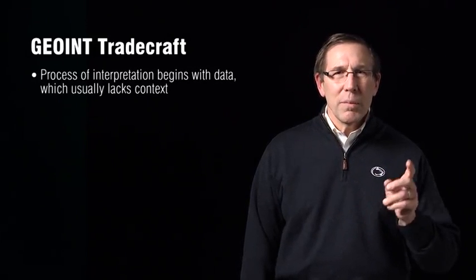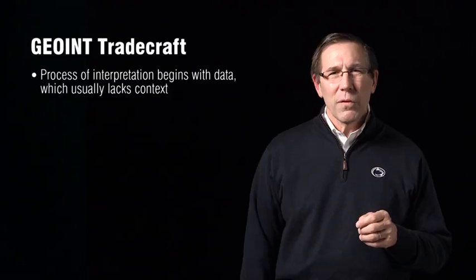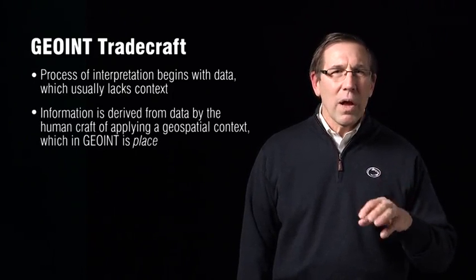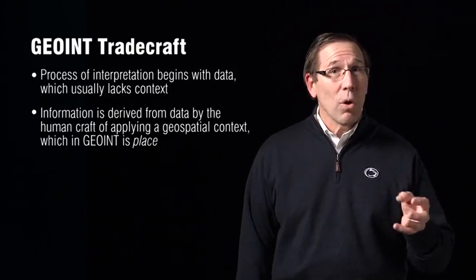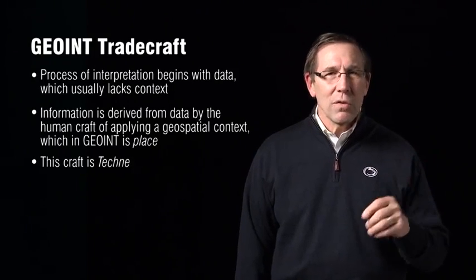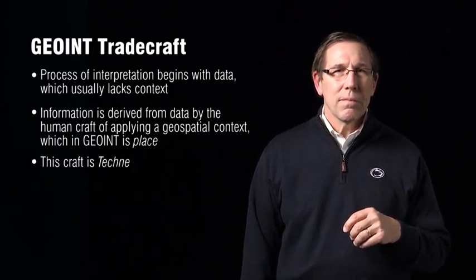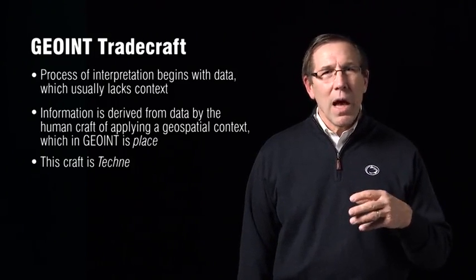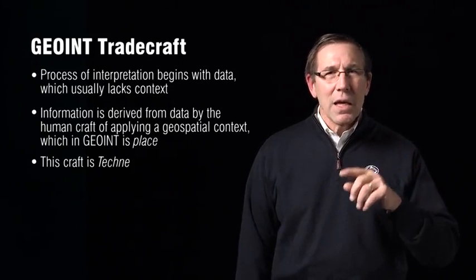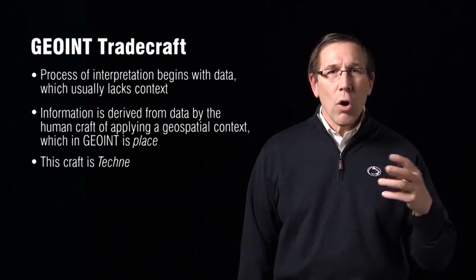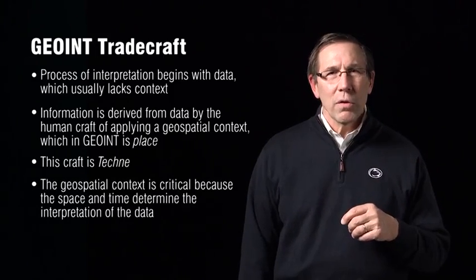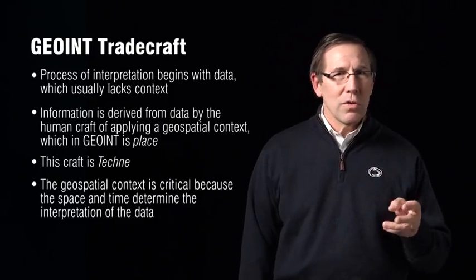The process of interpretation begins with data, which is generally context-free. Information is derived from data by the human craft implying a geospatial context — this is place. The craft is a concept of technique, which we discussed in lesson two. For example, if we have a crime at a location and a time, it's really just data. However, for the crime to have meaning, we need to put it into a context. For example, we had an armed robbery in daylight. The geospatial context is critical because space and time determines the interpretation of the data.